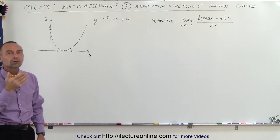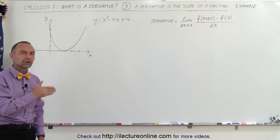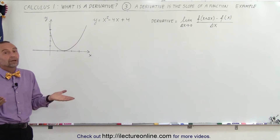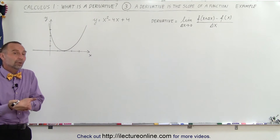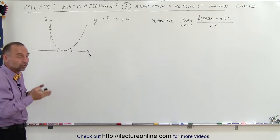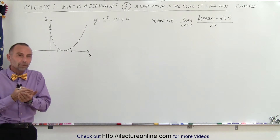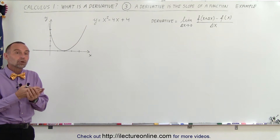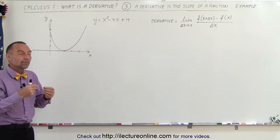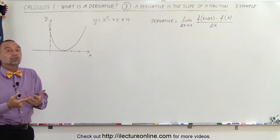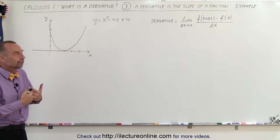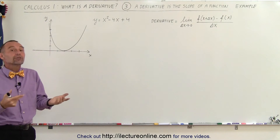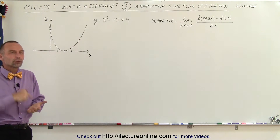But now we're trying to find the derivative of this function — in other words, the slope of this function. And right away you realize, since it's not a straight line, it's not going to be a single number. The slope of the function, or the derivative function, is going to be another function. So we're going to define the slope of this function by another function called the derivative.